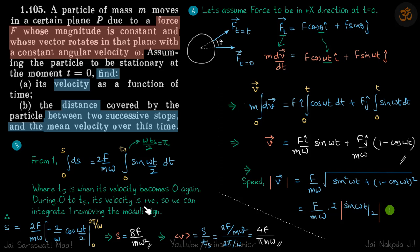During 0 to Ts its velocity is positive. So we can integrate removing the modulus sign because distance is same as the displacement. Solving this we get Ts equals 2 pi by omega. We'll put that limit and get the distance.